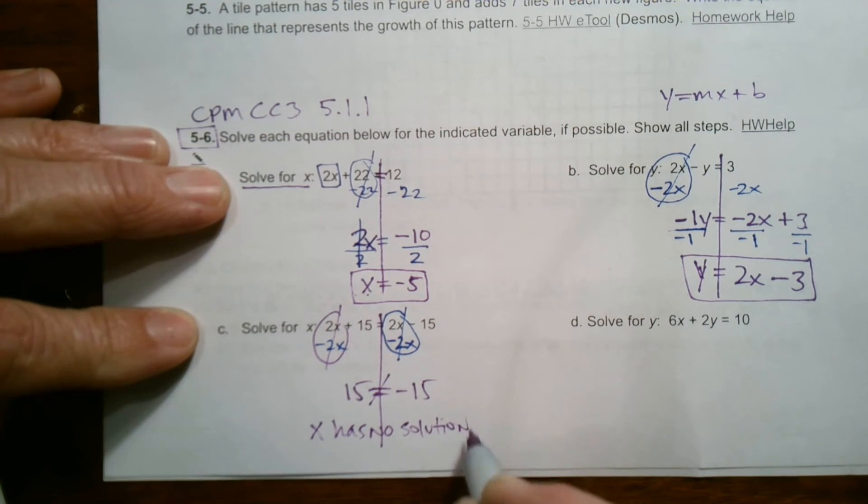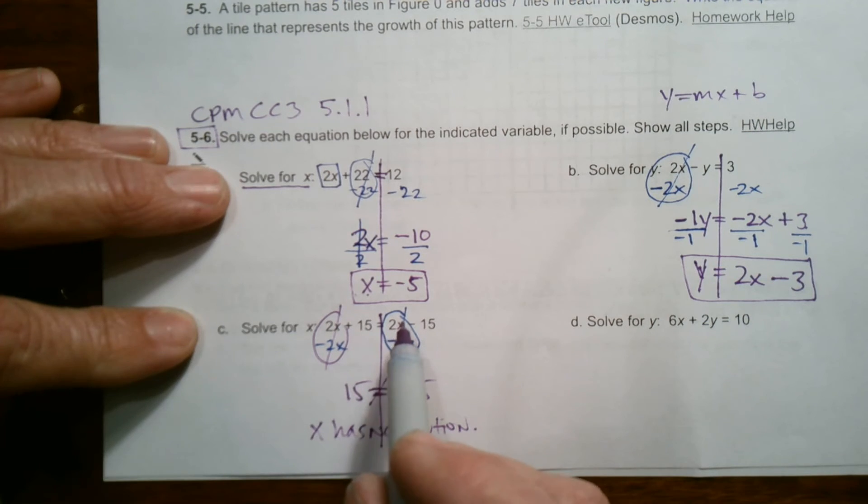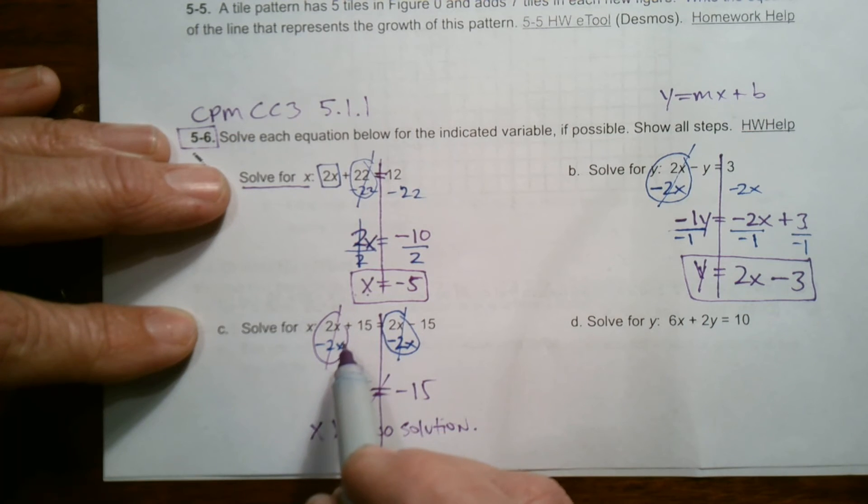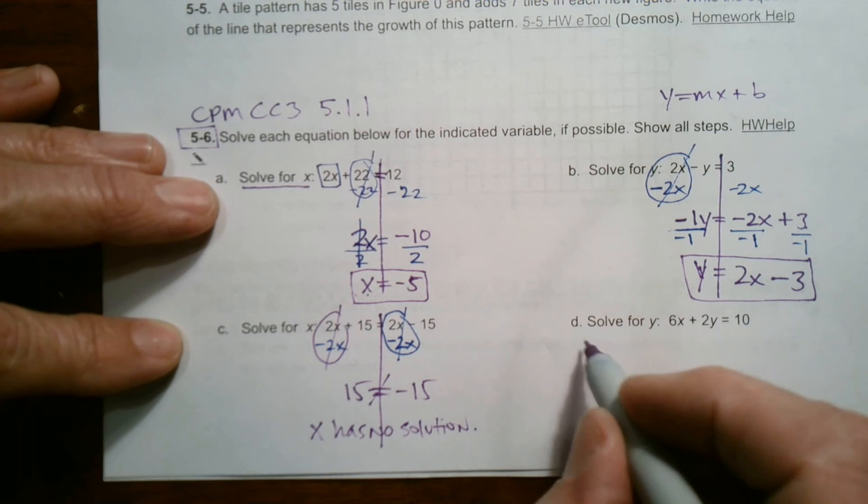And let me explain why, because you were looking for a number in the original equation that I could put in place of that x. So two times something plus 15, will it ever equal two times the same thing minus 15? That's impossible. Never have a number plus 15 and the same number minus 15, and they'd be equal. That'll never be equal. You can't take away 15 and add 15 to the same thing and get equal numbers. So no solution.